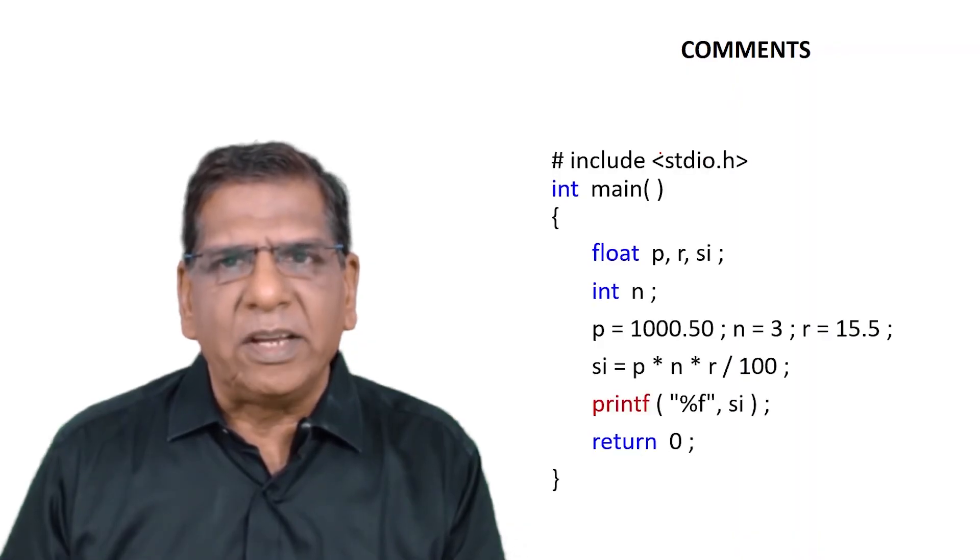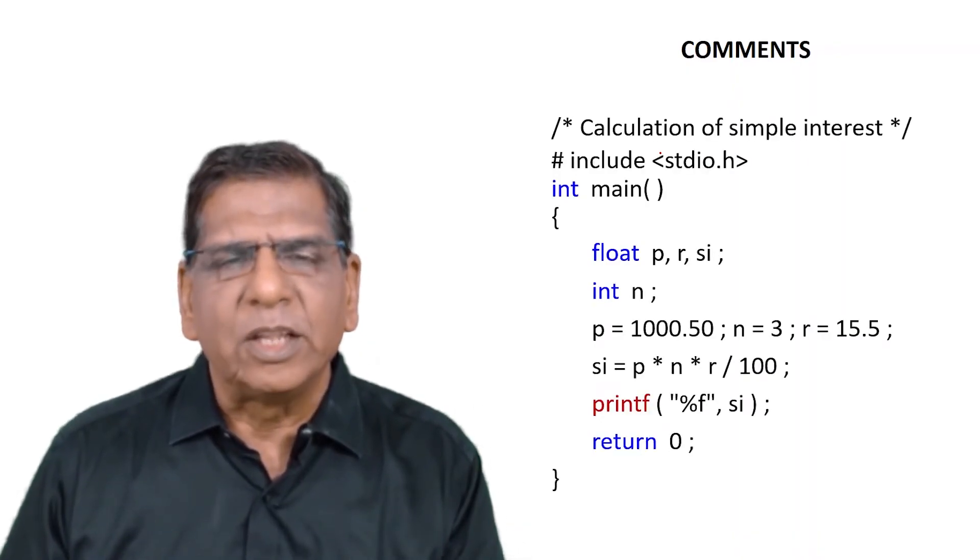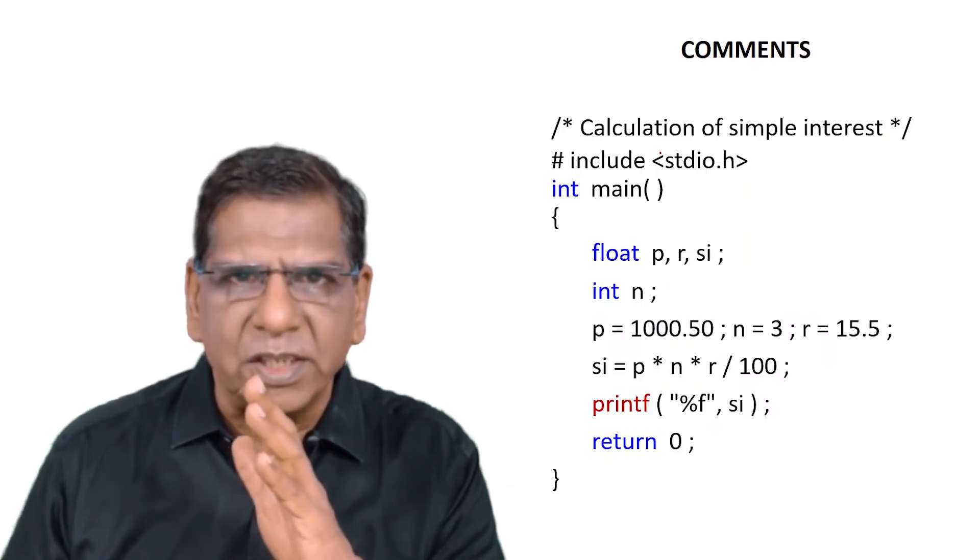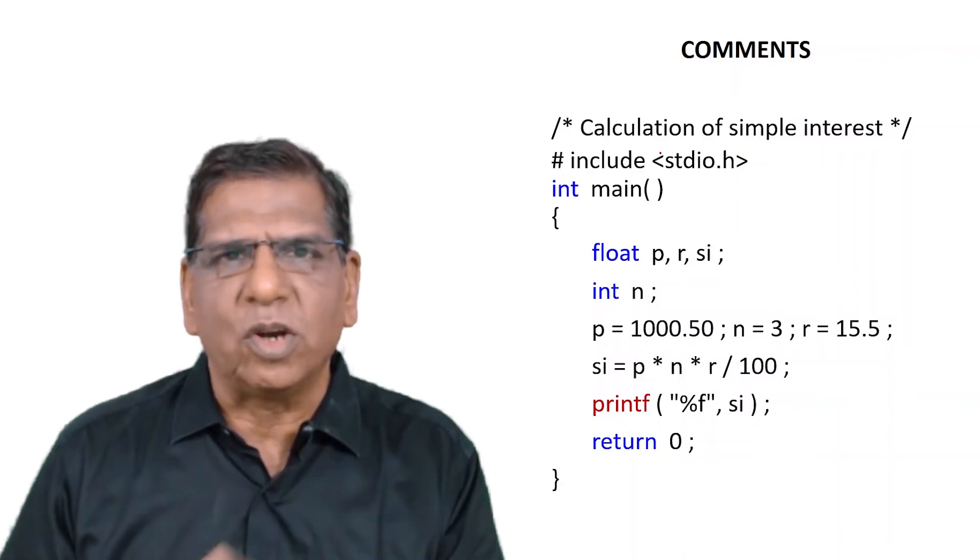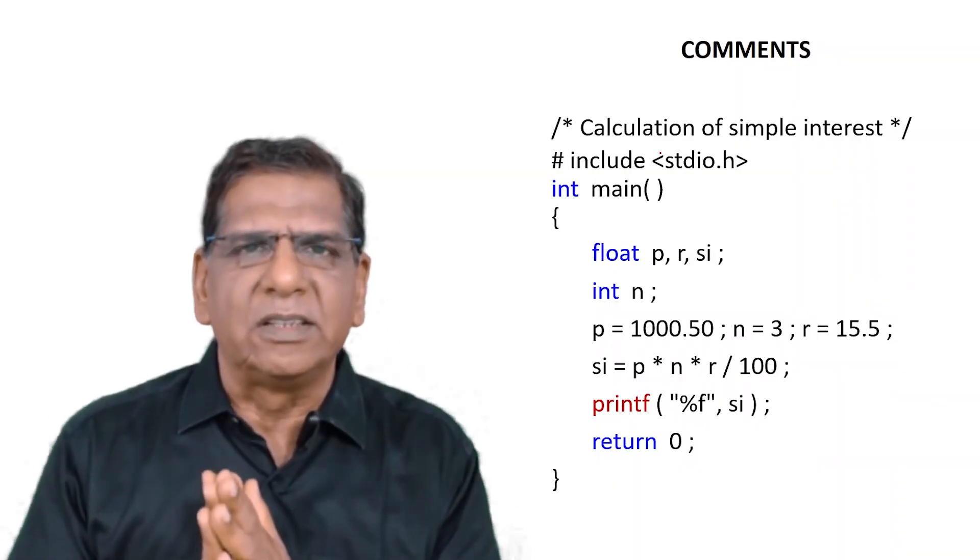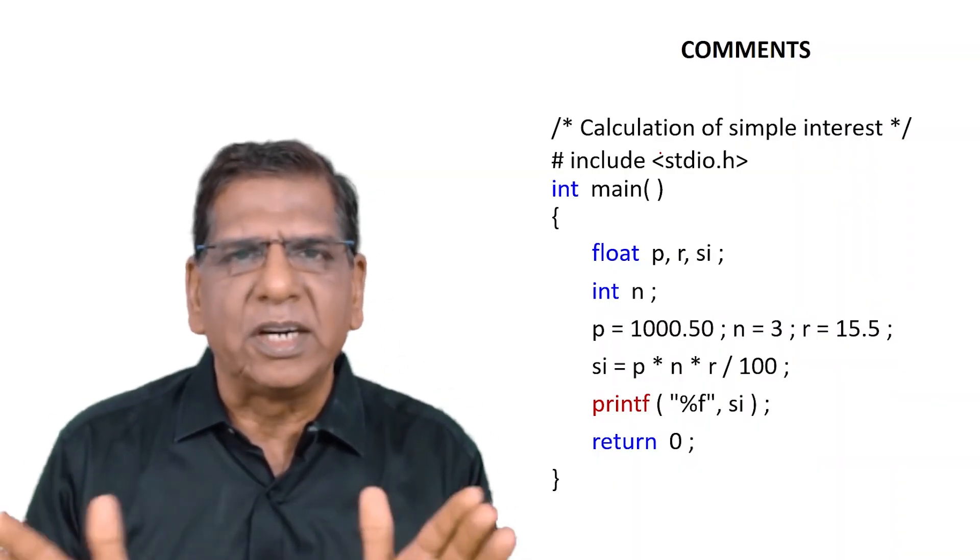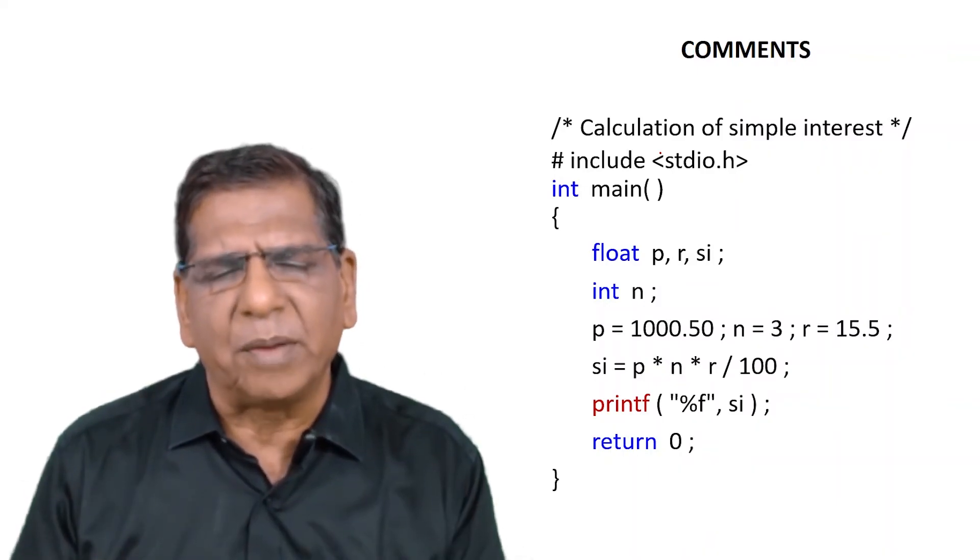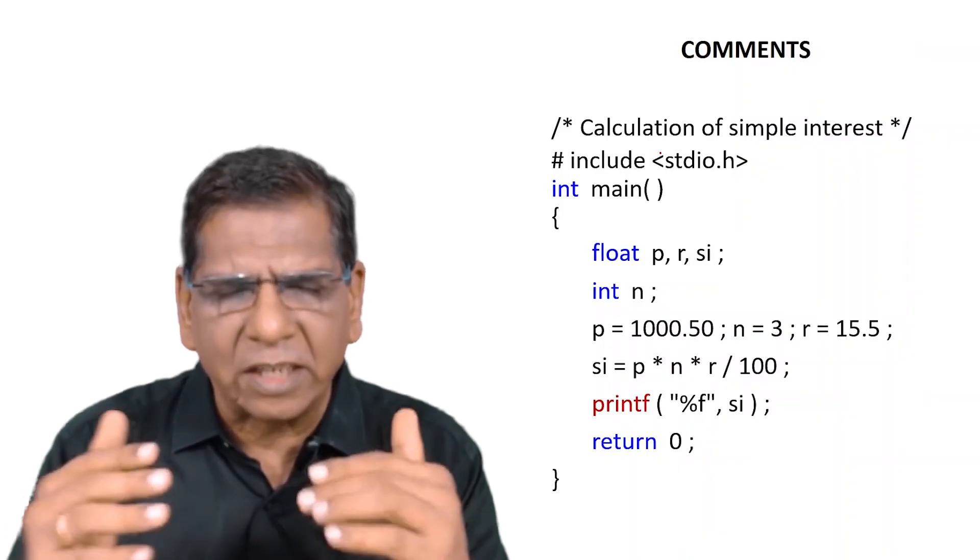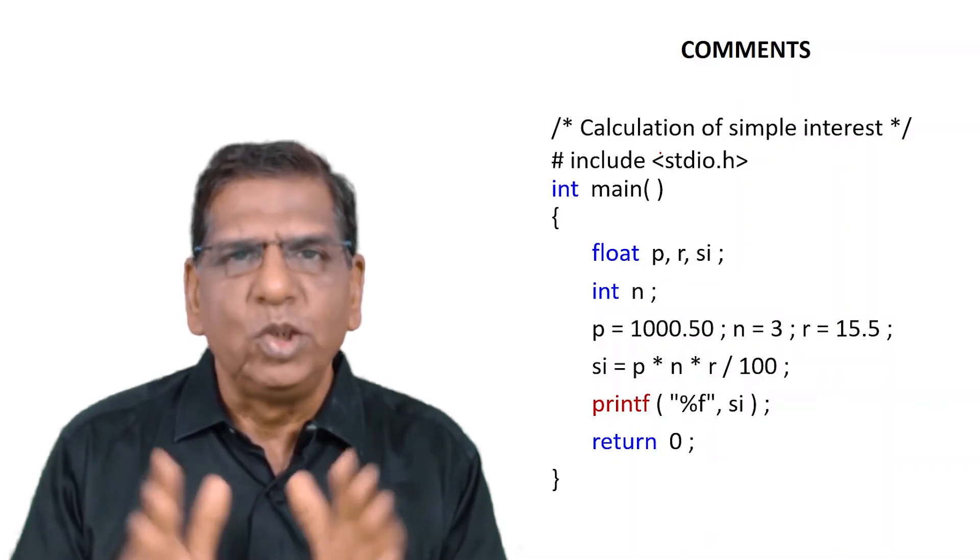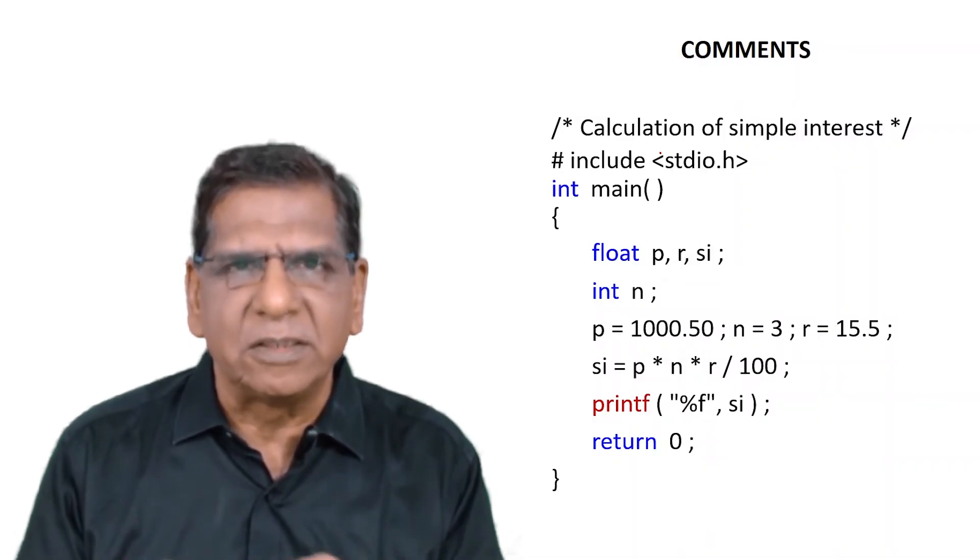So much about the very first program that we wanted to learn in this course. Now whenever we write a program, make sure that at the top you always give the purpose of the program in the form of a comment. That comment should always be enclosed within a pair of slash star, star slash combination. You are free to give whatever text you want within this slash star, star slash combination. It's going to be treated as a comment. Needless to say, you can give any number of comments anywhere within the program, in the top, in the middle, at the bottom, wherever you wish.